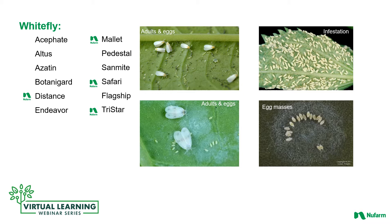Nothing is more irritating than watching a wave of whiteflies hovering over a crop. This pest is controllable with a rigorous program of systemic and contact insecticides. Class 4 insecticides such as Mallet, Safari, and Altus work long-term with an initial drench at the beginning of production. If a late-season treatment is needed, a locally systemic spray product like TriStar or Flagship, or a contact like Pedestal to prevent resistance issues, is required. Distance is again suggested for disrupting the life cycle and reducing insect pressure.